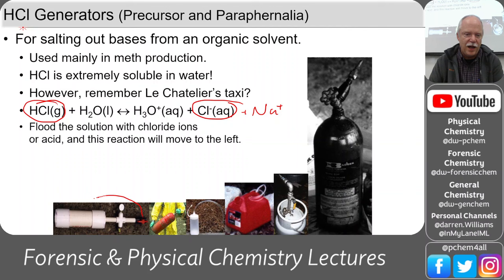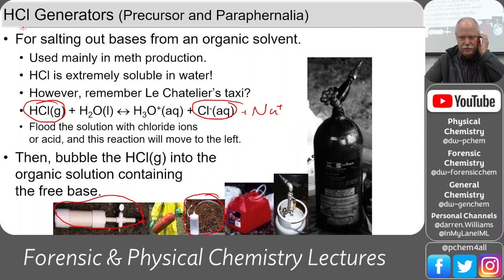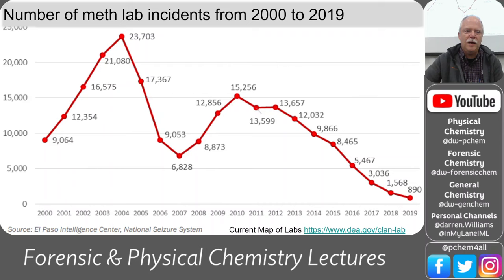One HCl generator has a valve and a little pressure gauge. Another is just a mustard container from the dollar store with some Tygon tubing. Here's one made from a propane tank, and here's one from a fire extinguisher. All of these are evidence of clandestine activity.